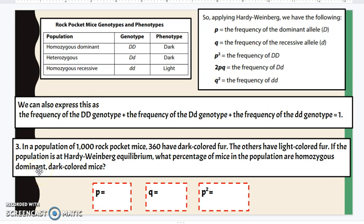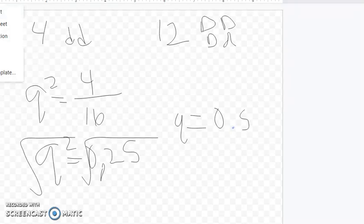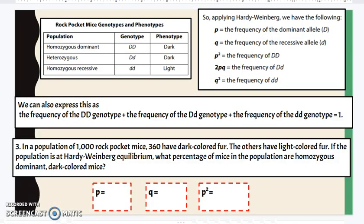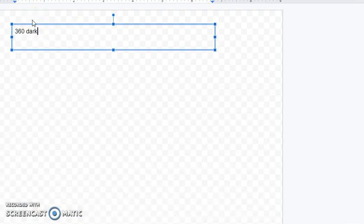And number 3, in a population of 1,000 rock pocket mice, 360 have dark colored fur. The others have light colored fur. If the population is in Hardy-Weinberg equilibrium, but first let's write down our information as we go through this so it's a little bit easier to keep track. So 360 have dark colored fur, and the rest have light colored fur. So 1,000 minus 360 means we're looking at 640 have light fur. Now that light fur is the homozygous recessive phenotype.